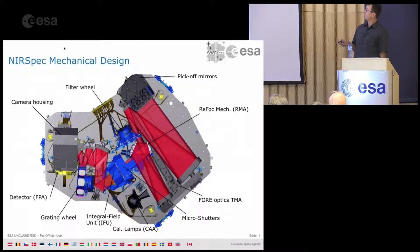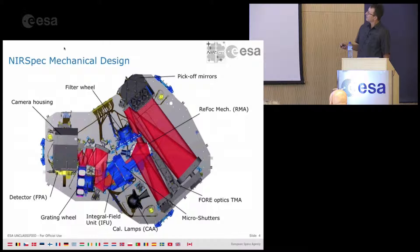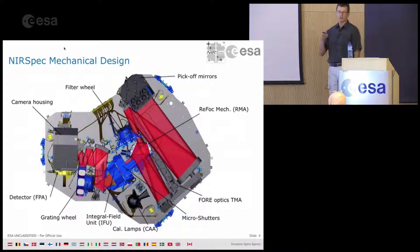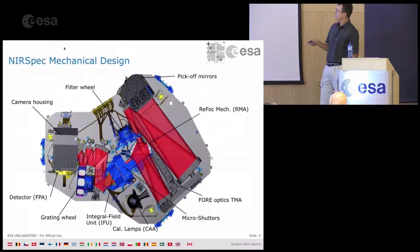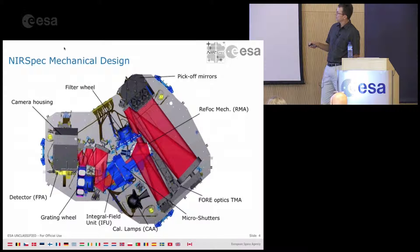Mechanically, you can trace the three lenses: the pick-off mirrors, the fore-optics TMA (three mirrors), then a refocus mechanism ensuring the telescope focus lands on the micro-shutters, followed by the collimator TMA, the grating wheel, the camera TMA, and finally the two NIRSpec detectors.